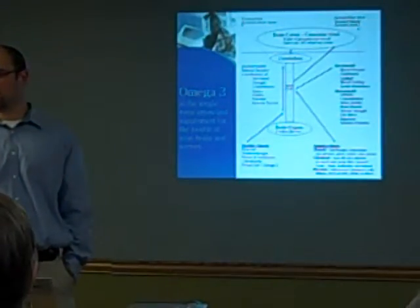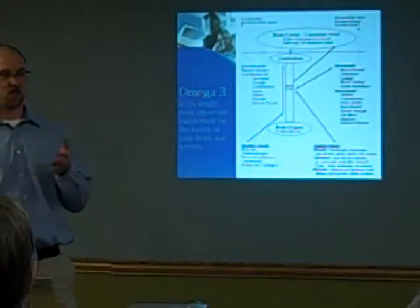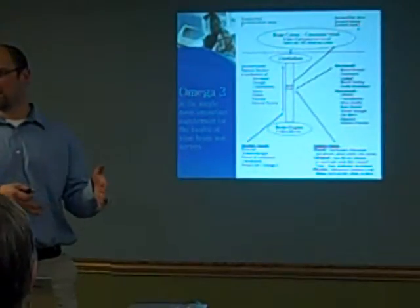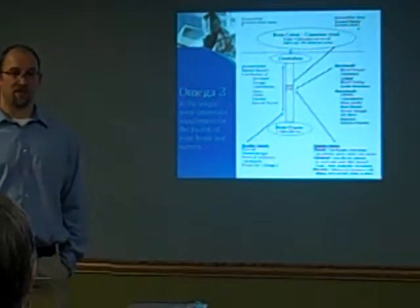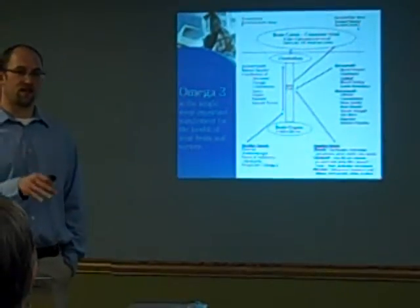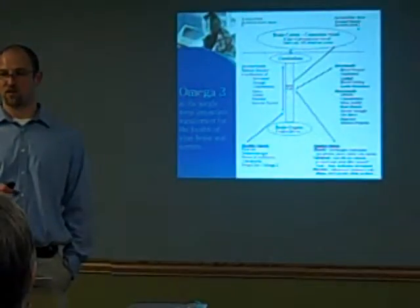We have too much omega-6, which is in grains, and when that ratio gets off, our body moves towards inflammation. A lot of the research that we learn on vitamin D talks about omega-3 at the same time, because they come from the same source.